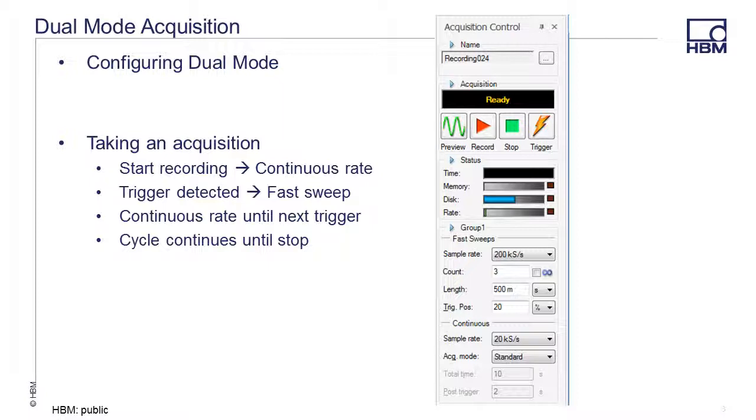When you start a dual-mode recording, Perception immediately starts recording data at the continuous sample rate. When a trigger is received, Perception records one sweep at the fast sweep sample rate. After the sweep is completed, the sample rate drops down to the continuous sample rate until another trigger is received. This cycle continues until either the trigger count is reached or the user stops the acquisition. If the infinity box is selected, only the user selecting stop will stop the acquisition.